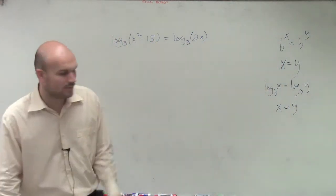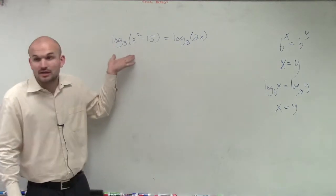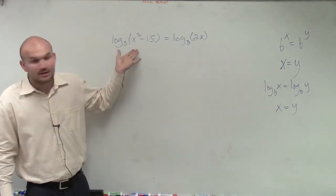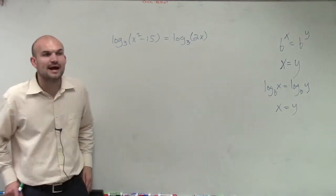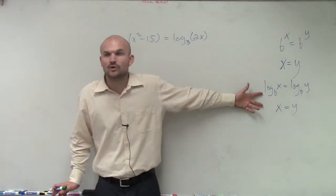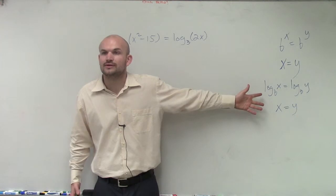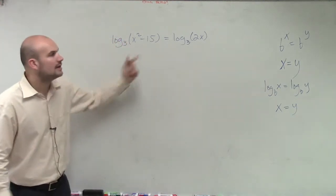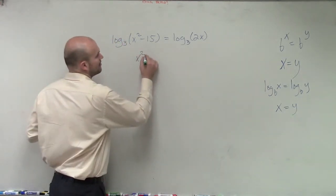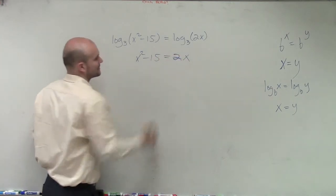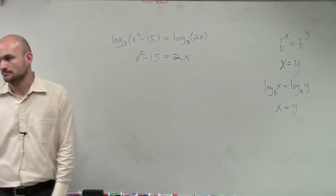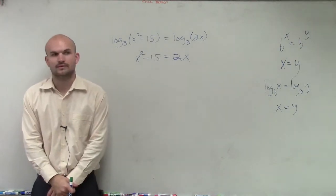So in this equation, what we're looking at is I noticed that I have log base 3 of x squared minus 15 is equal to log base 3 of 2x. Now, by applying this rule, what can I say is equal to one another? The log. Right. x squared minus 15 is equal to 2x. So if you can see, that would be. All right.